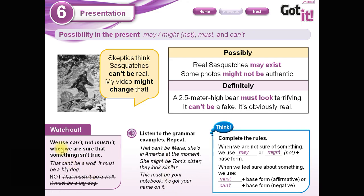Note: we use 'can't,' not 'mustn't,' when we are sure that something isn't true. For example: 'That can't be a wolf — it must be a big dog.' May and might are for when we are not sure; must and can't are for when we are absolutely sure. Cuando estamos completas y totalmente seguros de algo. May and might — y la forma negativa, may not o might not — las voy a utilizar cuando existe una posibilidad. Cuando estoy segura y es afirmativo: must. Si es negativo: can't.